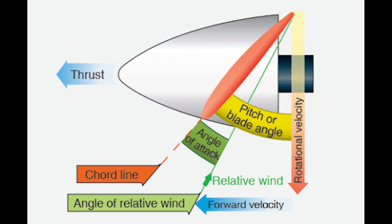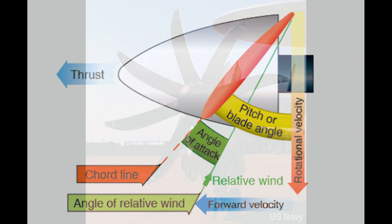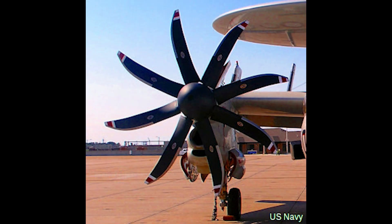At its core, an airplane propeller is a rotating blade system that generates thrust by pushing air backward. This process adheres to Newton's third law of motion, which states that for every action, there is an equal and opposite reaction. When a propeller blade moves through the air, it exerts a force on the air that propels the aircraft forward.